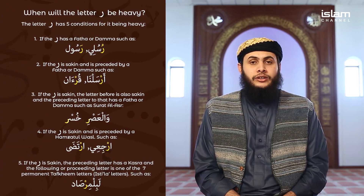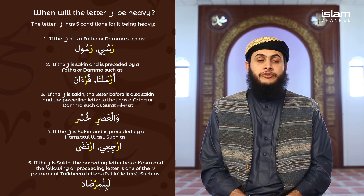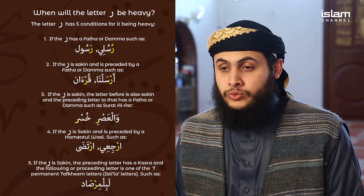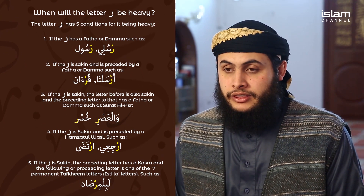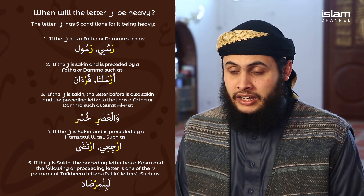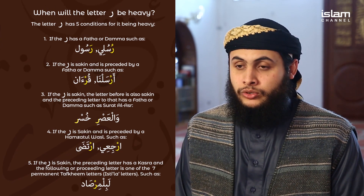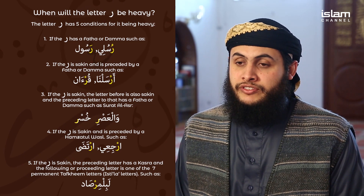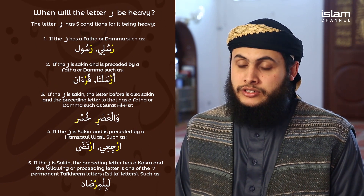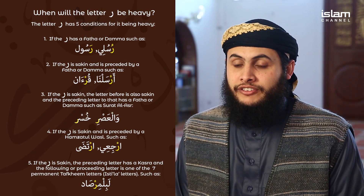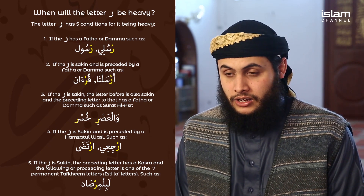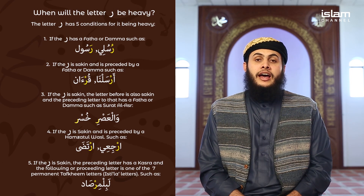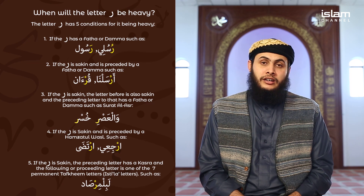We also spoke about the letter ra, which is sometimes heavy and sometimes light. The ra is heavy in five conditions: first, when it has a fatha or dhamma; second, when the ra is sakin and before it is a fatha or dhamma; third, when the ra is sakin and before it is sakin and the letter before that has a fatha or dhamma, such as the end of each verse of Surah Al-Asr; fourth, when the ra is sakin and before it is a hamzat al-wasl, such as 'irji'i' or 'irtada'.